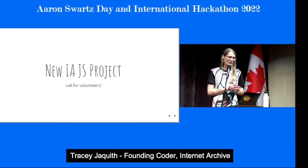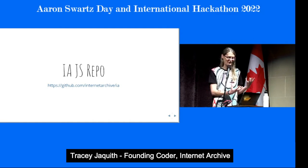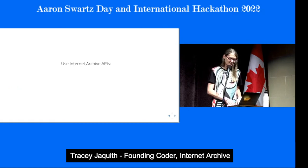So — act two. We're working on a new JavaScript project at the Internet Archive called the IA project, and we are looking for volunteers right now because we're going to try to make this an almost majority-volunteer project. It's at our GitHub — github.com/internetarchive — and it's under the project IA.